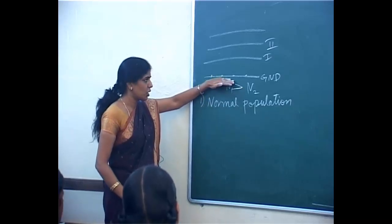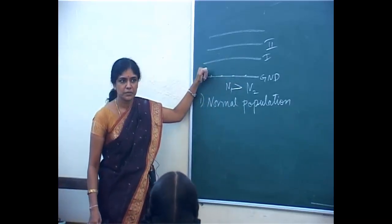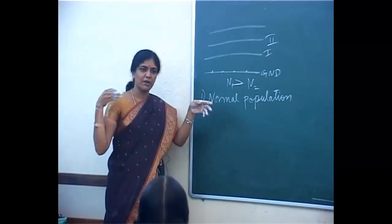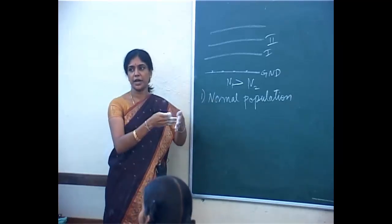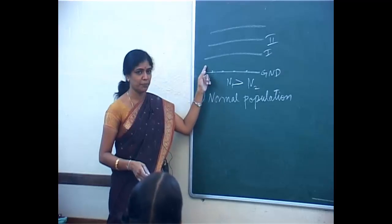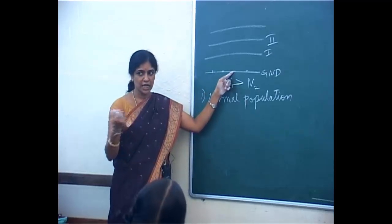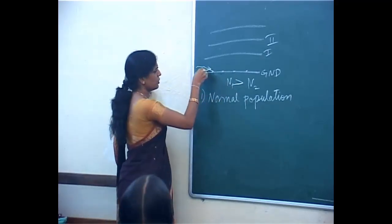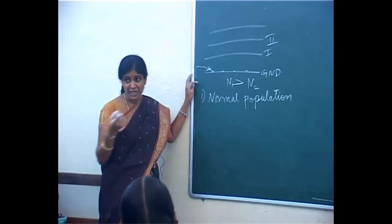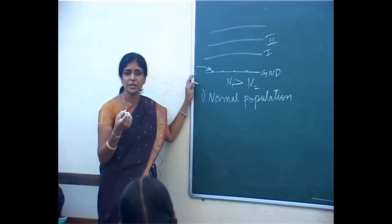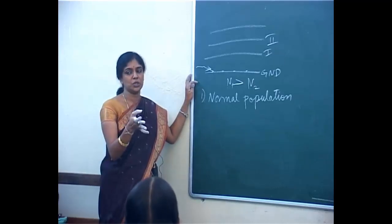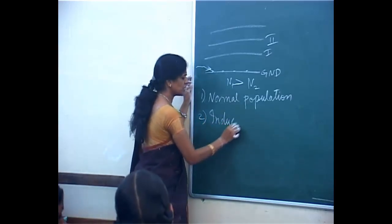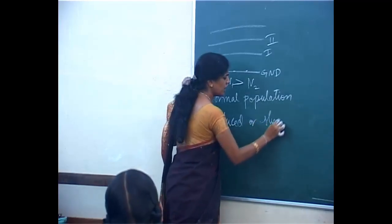Now I want to take the atoms from the ground state to the excited state. I will use some external agency — for example, passing X-rays or hitting with ultraviolet radiation. When light hits these atoms, they will gain energy, get excited, and jump to the higher energy level — the excited state. We call this process induced or stimulated absorption.